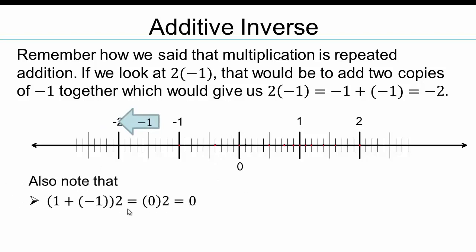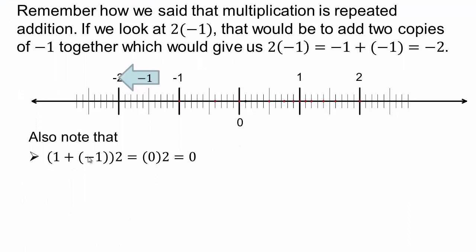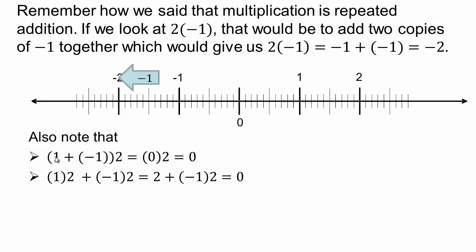In general, 1 plus negative 1 times 2 is the same as 0 times 2, because 1 and negative 1 are additive inverses. By the distributive property of multiplication over addition, we have 1 times 2 plus negative 1 times 2, which gives 2 plus negative 1 times 2 equaling 0. That means whatever the value of negative 1 times 2 is, it is the additive inverse of 2 — because they add up to 0.